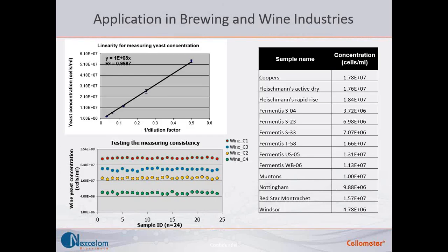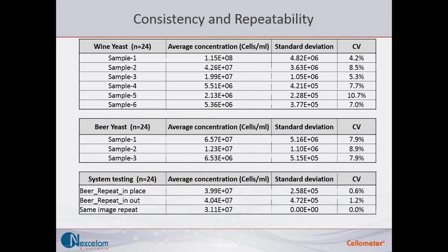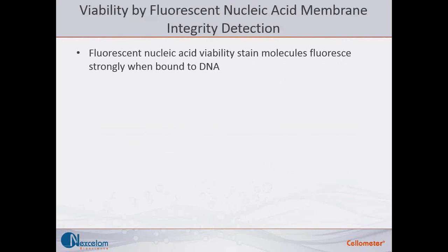For consistency testing: the system demonstrates linearity for measuring yeast concentration from 5×10⁵ cells/mL up to 5×10⁷ cells/mL with a very high R-squared value. Over 24 repeated samples, different yeast types show CVs generally less than 10%. When repeatedly measuring the same sample, CV is less than 2%.